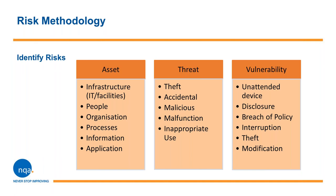Vulnerabilities can be identified in the following areas: processes and procedures; management routines; personnel; the physical environment; information system configuration; hardware, software, or communications equipment; and dependence on third parties or external bodies. The presence of a vulnerability does not cause harm in itself — there needs to be a threat present to exploit it. A vulnerability with no corresponding threat may not require a control but should be recognized and monitored for changes. It should be noted that an incorrectly implemented or malfunctioning control, or a control being used incorrectly, can itself become a vulnerability. Conversely, a threat with no corresponding vulnerability may not result in a risk.